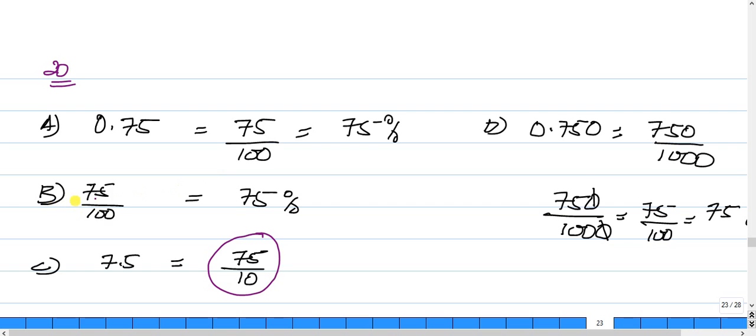Let's look at B. 75 out of 100 is going to be 75%. Let's look at D. I'm going to skip C for now and go to D.